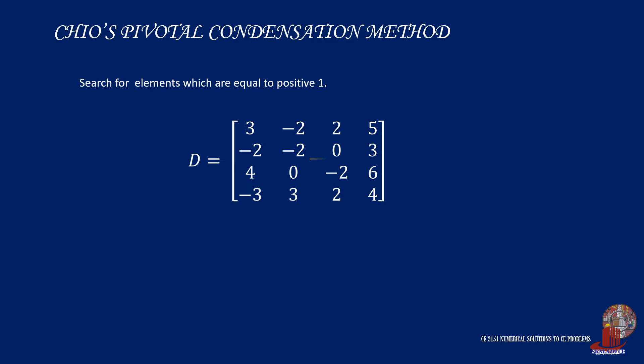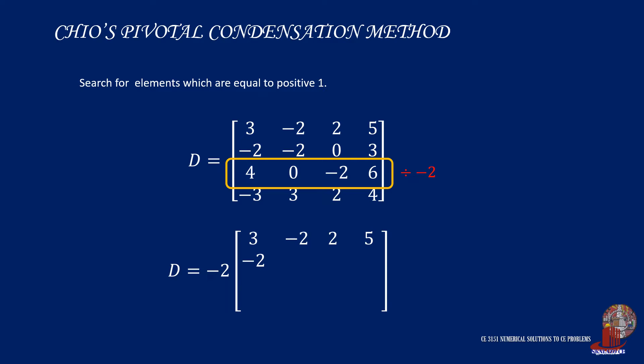So as not to simplify each element, we can work on the third row. Note that the elements are 4, 0, negative 2, and 6. If we divide all elements in the row by negative 2, row 3 would have negative 2, 0, 1, and negative 3. Use 1 as the pivot element. It is located at position 3, 3.